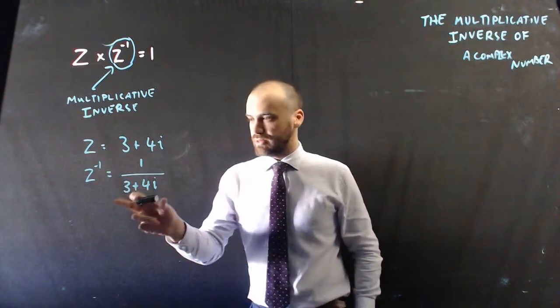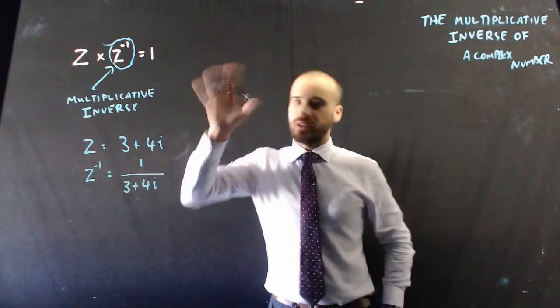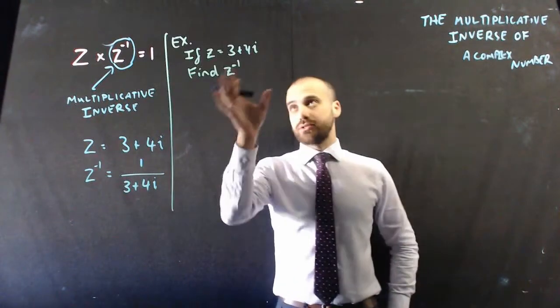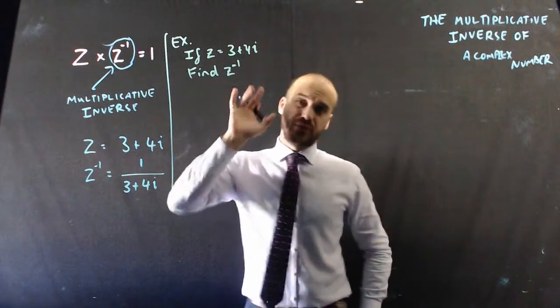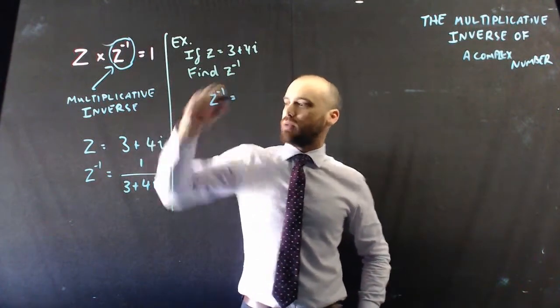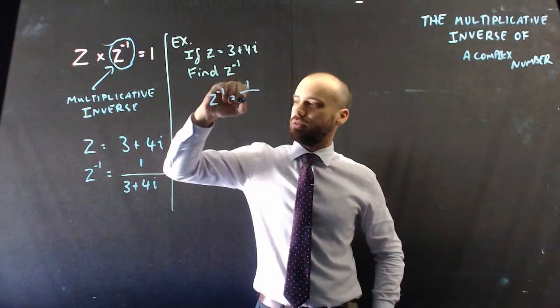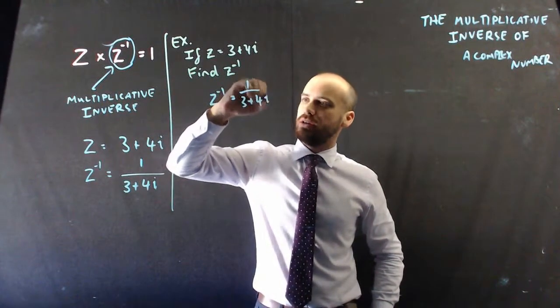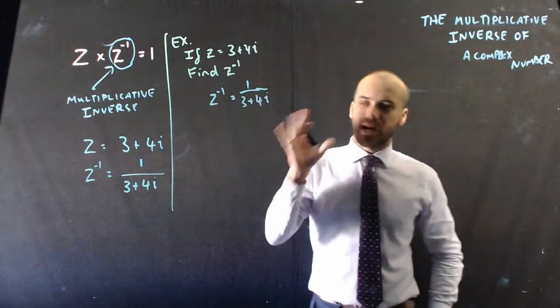Alright, so I've done my first step here. I'll just write that up formally. If z equals 3 plus 4i, find the inverse, or the multiplicative inverse. I can say that z to the negative 1 equals that, 1 on 3 plus 4i. But I've already explained that that's very, very ugly.